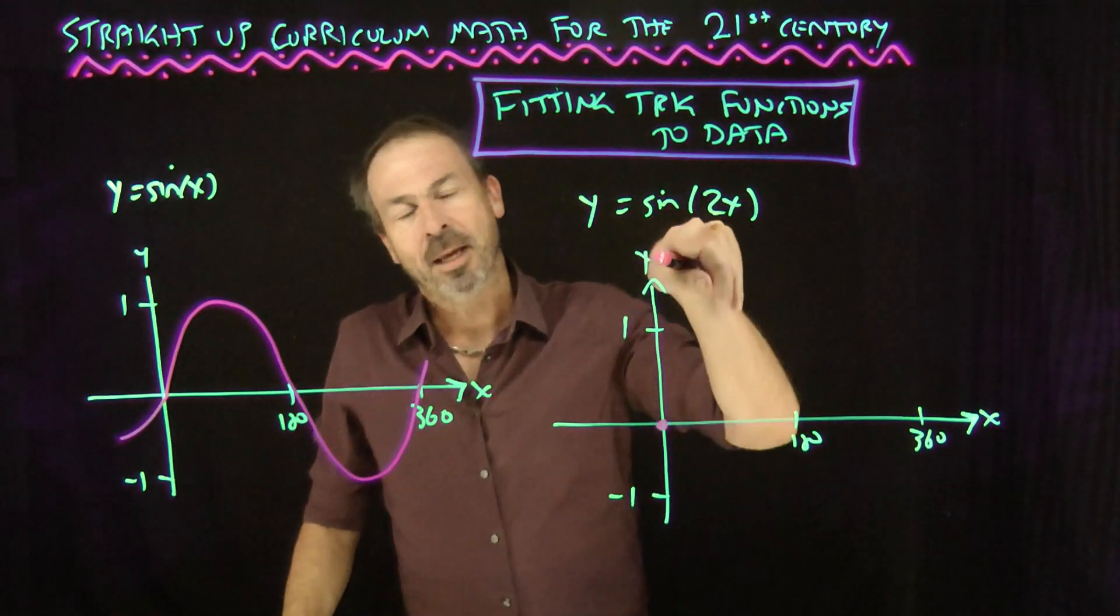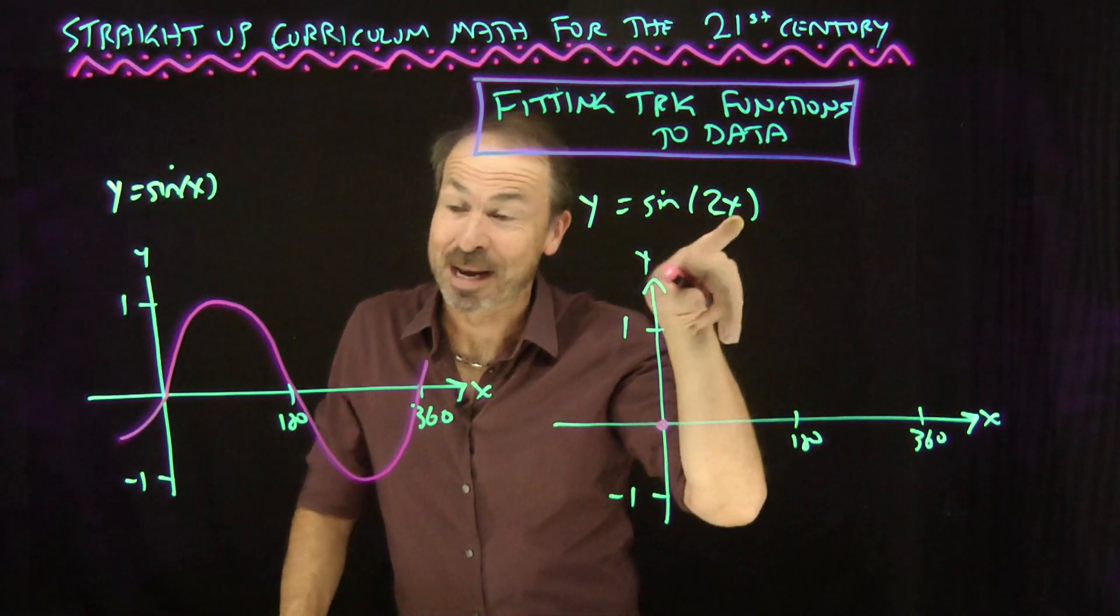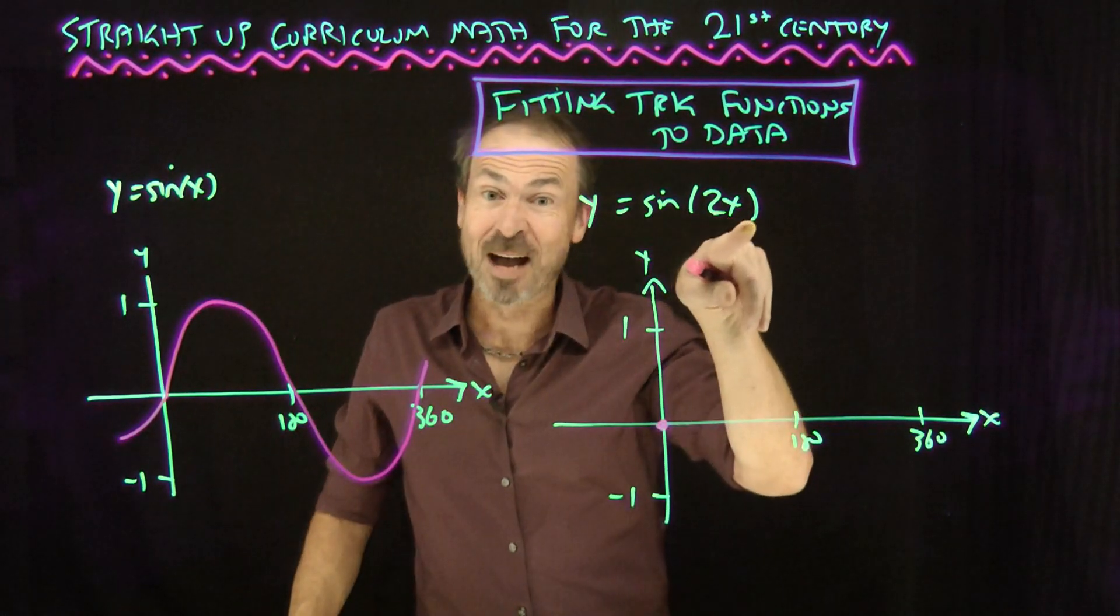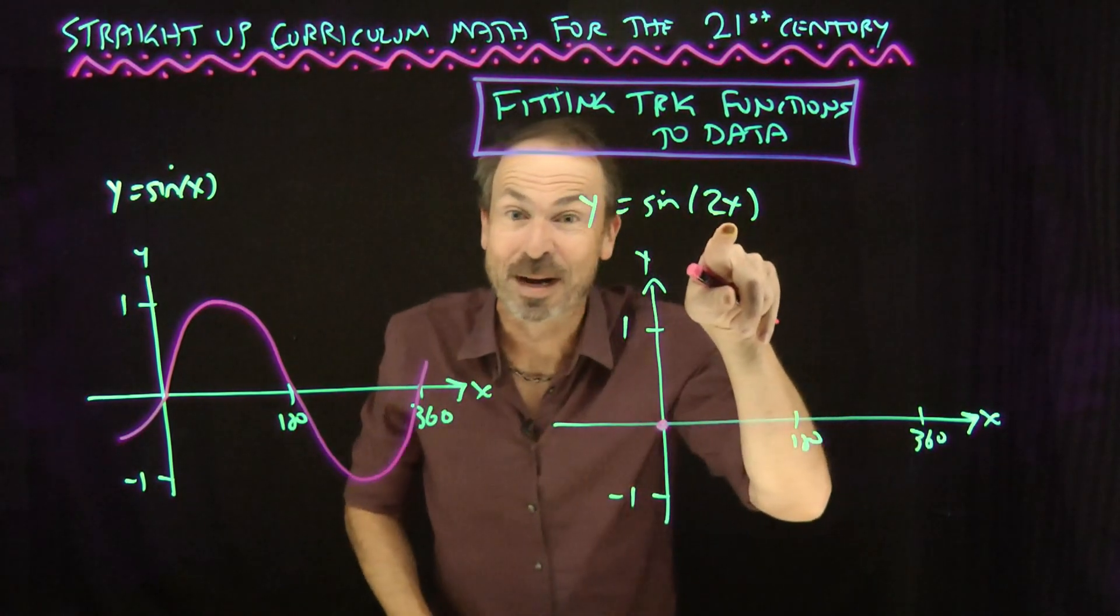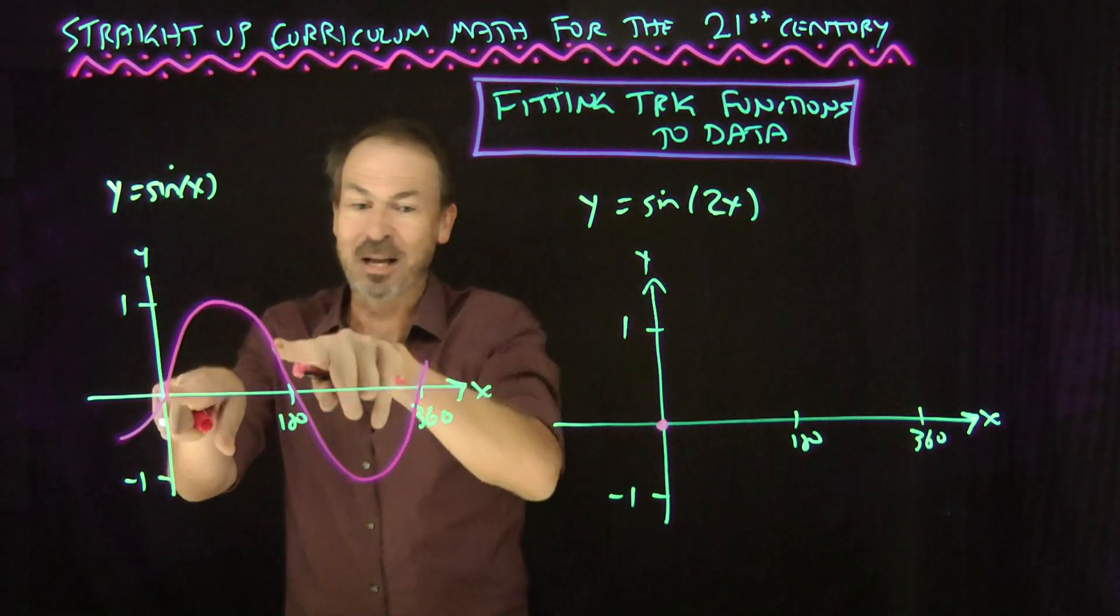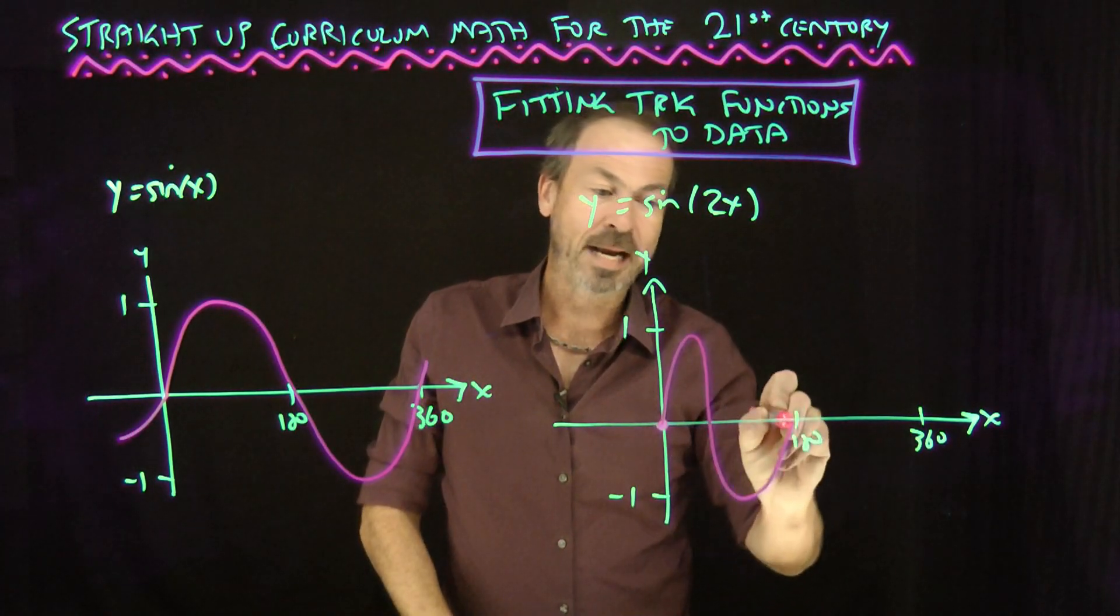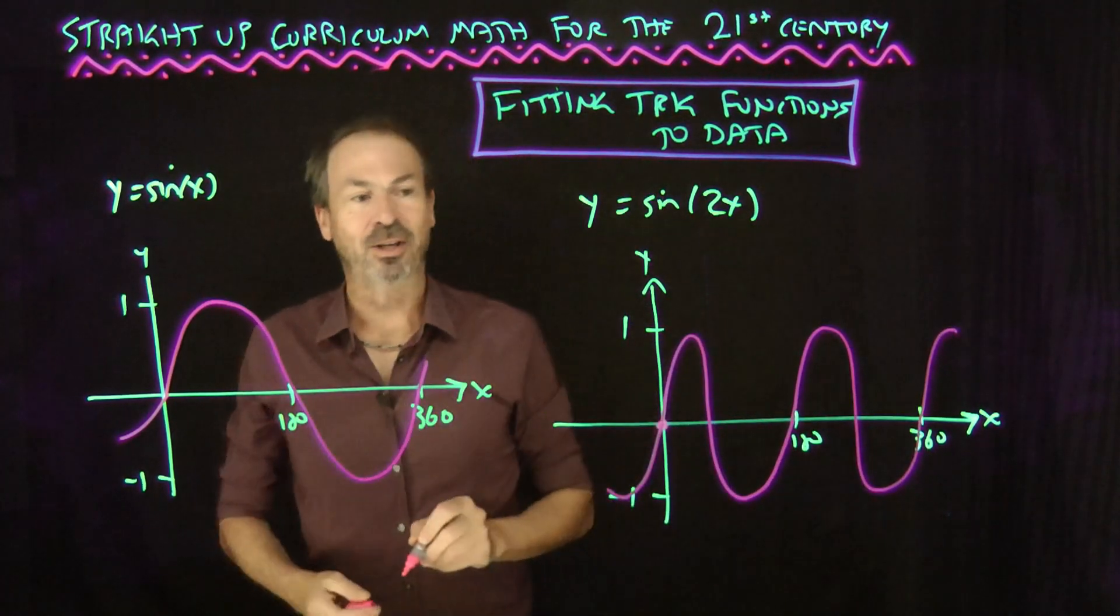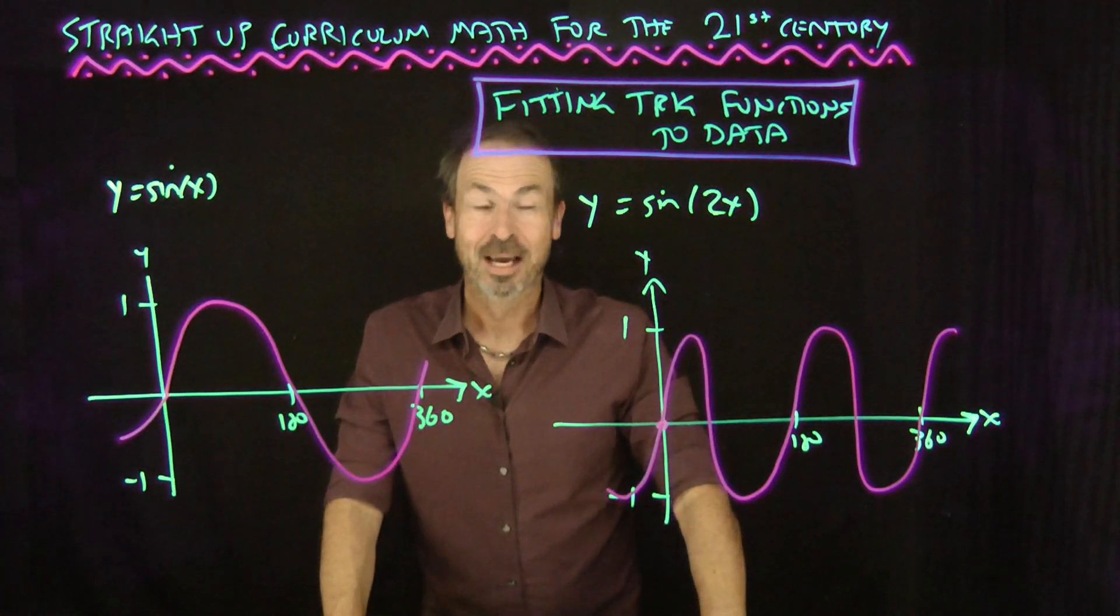When x is 0, I still get the point 0 inside the sine. So it still goes through the origin. But when x is 180, 2x has the value 360 already. This one's going through twice as fast. So say I'm completing one cycle in 360, this graph must be completing one cycle in 180.